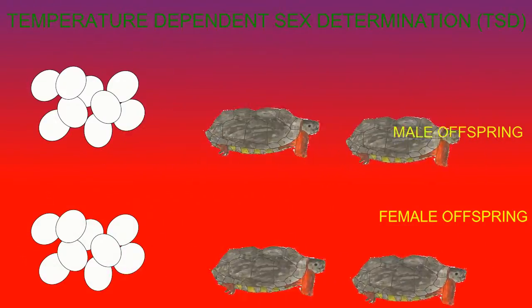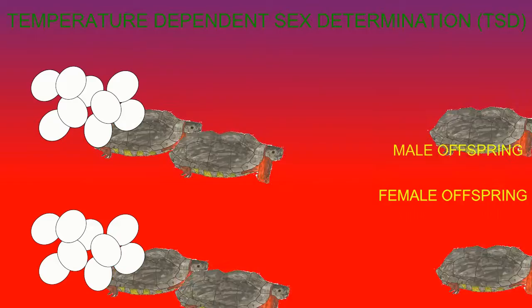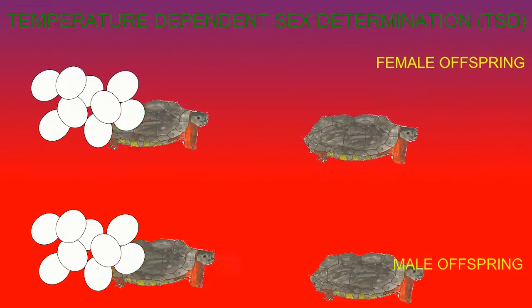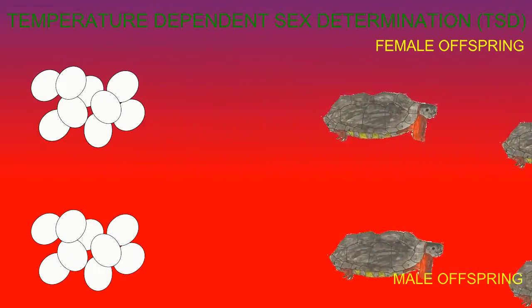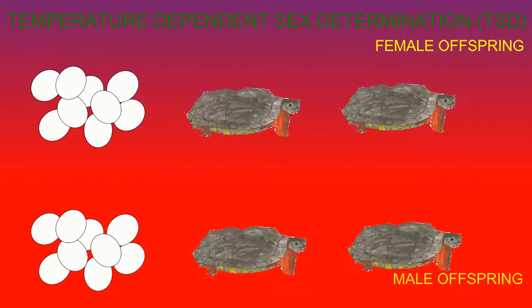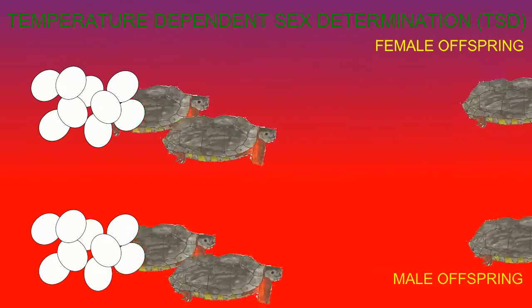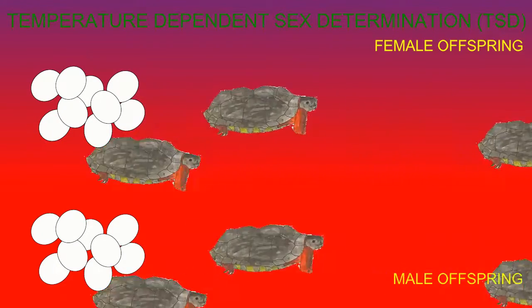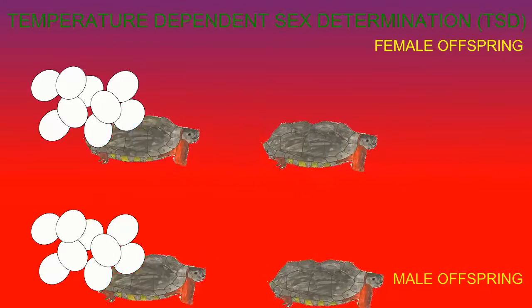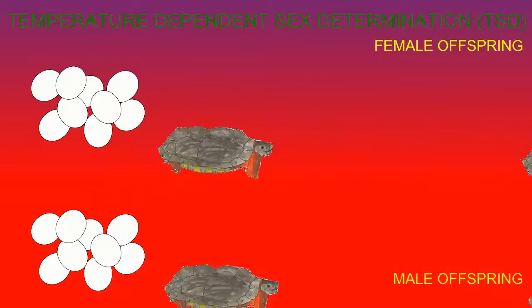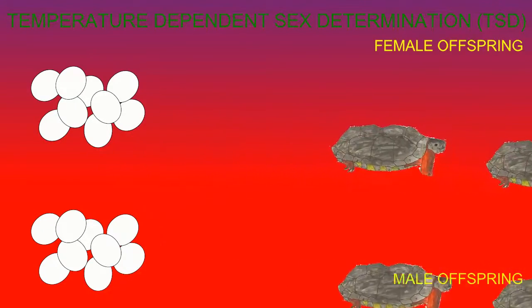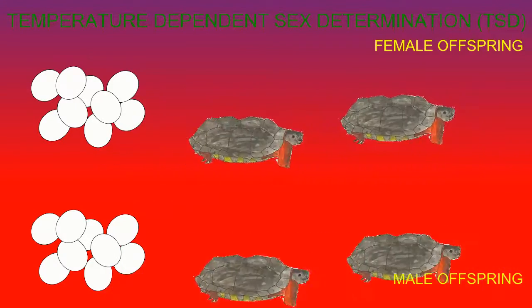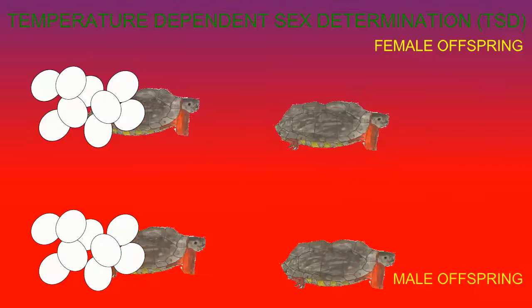In other species of turtles, the opposite pattern of development is evident, so that if a nest were divided and the eggs were separated, the warmed eggs would then develop as male, and the cooled eggs would develop as female.